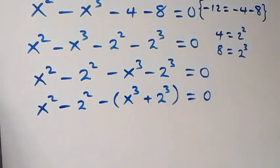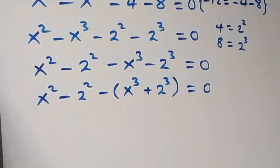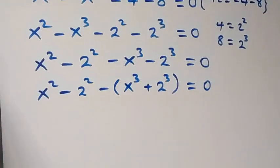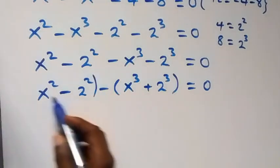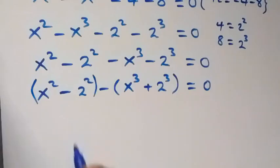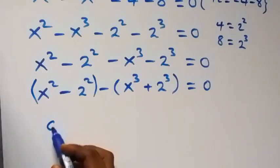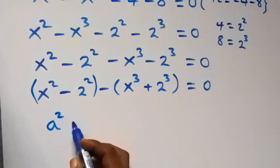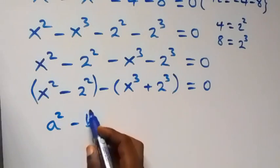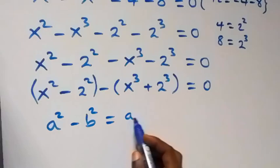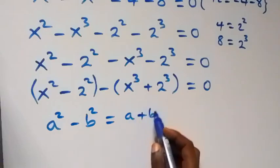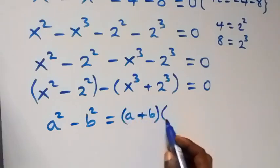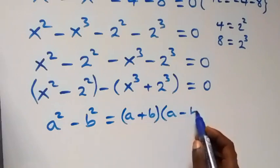If you are enjoying this class give it a thumbs up and also subscribe if you are yet to do so. From here we apply the difference of two squares: a squared minus b squared equals (a plus b)(a minus b).